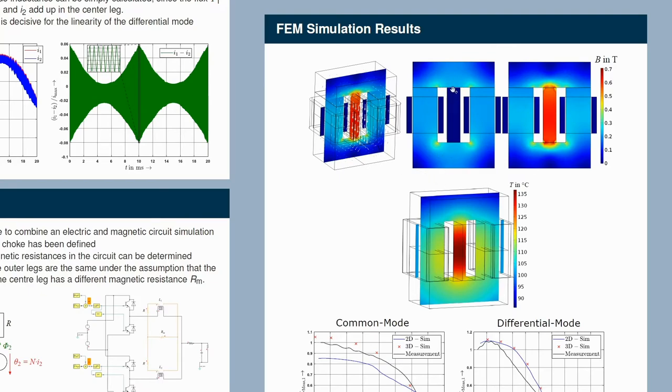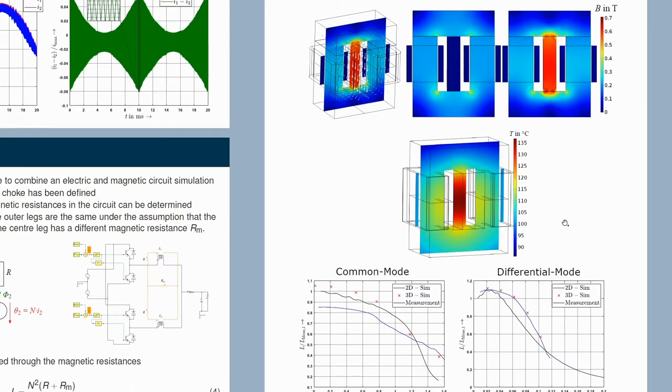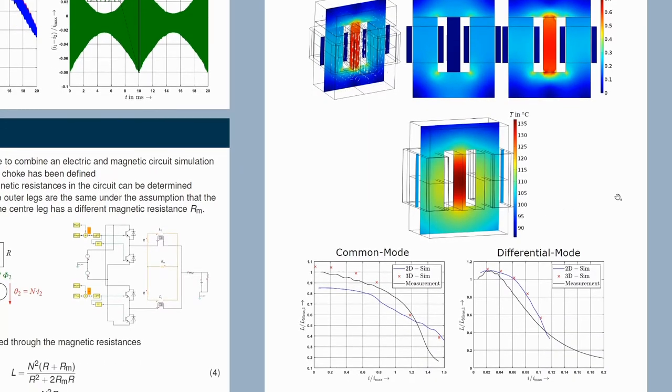And this one is the differential mode flux path. And right here, we also did a thermal simulation. We put in all the losses of the core, of the ferrite, the soft magnetic composite, and of course of the foil windings. This is potted in a resin and this is then mounted on a heat sink.